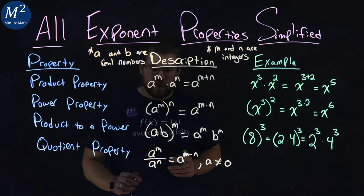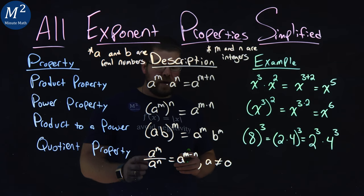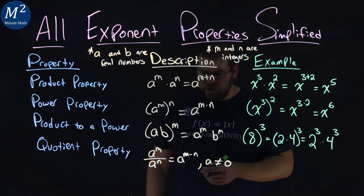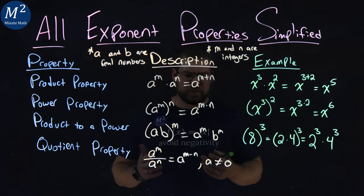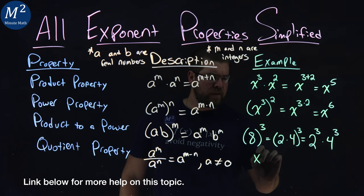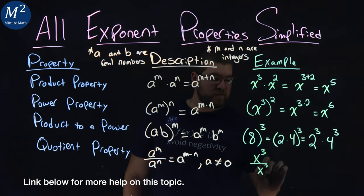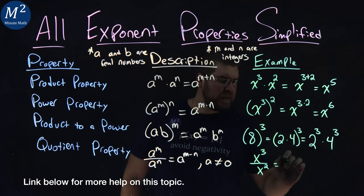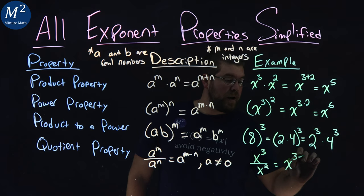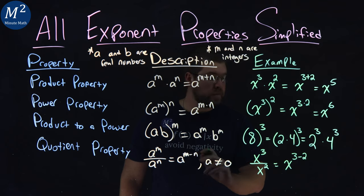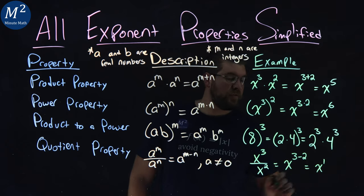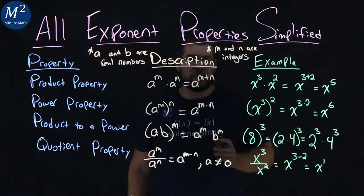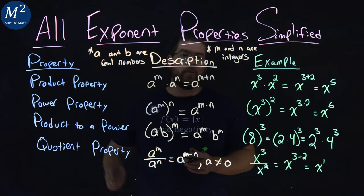Now the quotient property: a to the m power over a to the n power equals a to the m minus n, where a is not equal to zero. For example, x to the third power over x squared — same base x — equals x to the three minus two, which is x to the first power. And there we've gone through four properties.